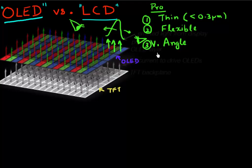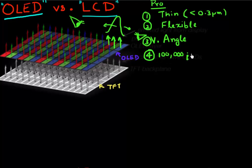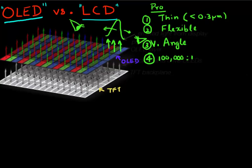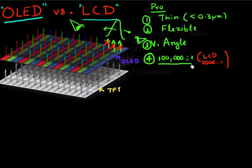Another advantage is that OLED-based displays have very high contrast. They can easily achieve contrast of 100,000 to 1, versus LCD which only achieves a maximum contrast of around 1,000 to 1. This comes from the fact that LCD has a problem turning the light off — black is never really black. But with OLEDs, you generate black by essentially turning off the red, green, and blue pixels, so you have no light coming out and black is really black.